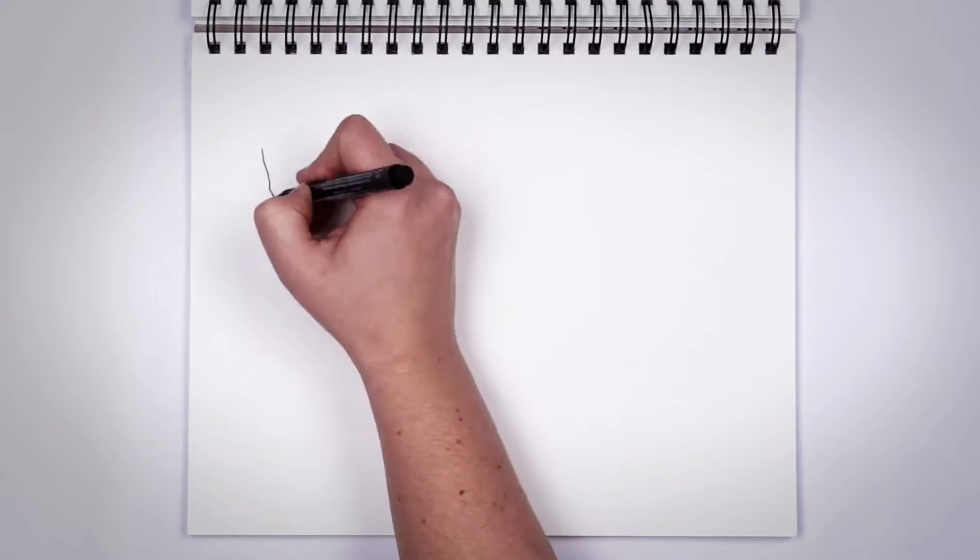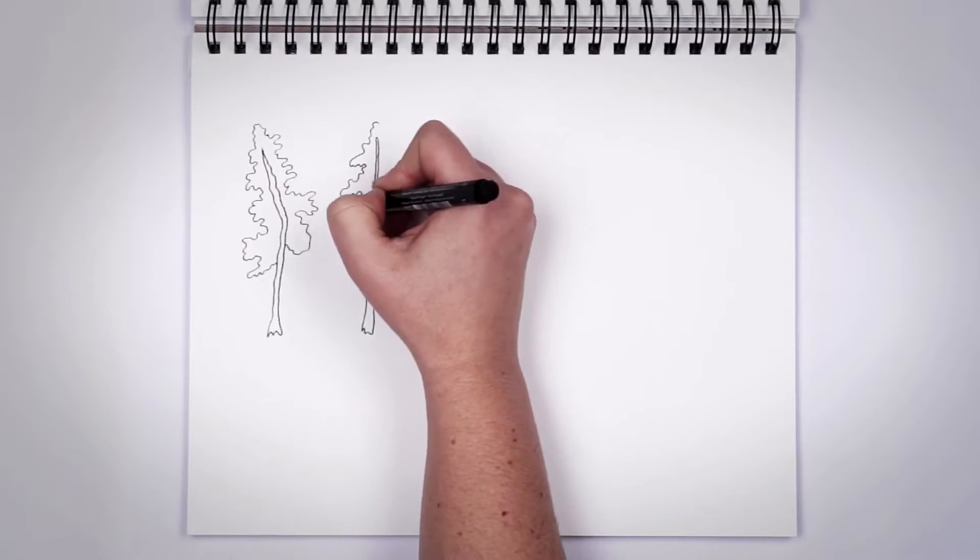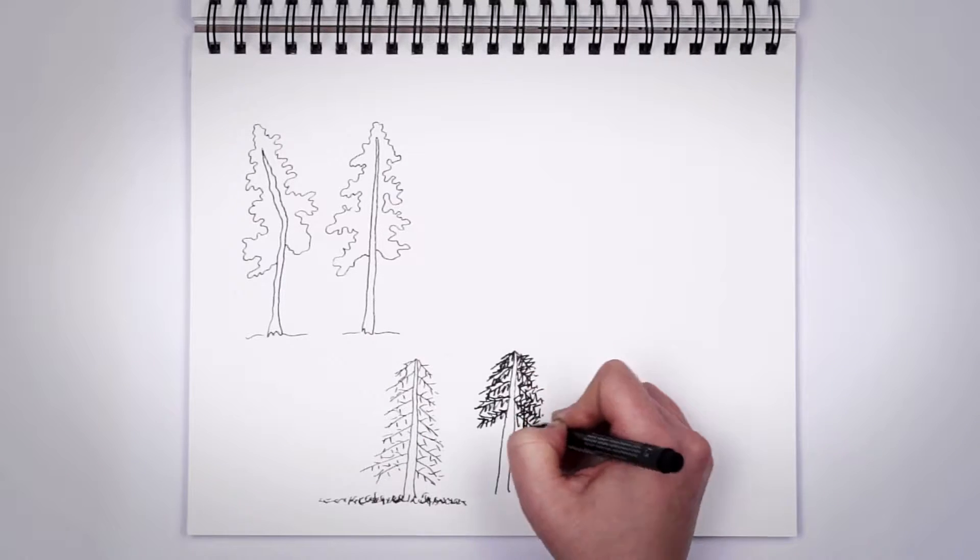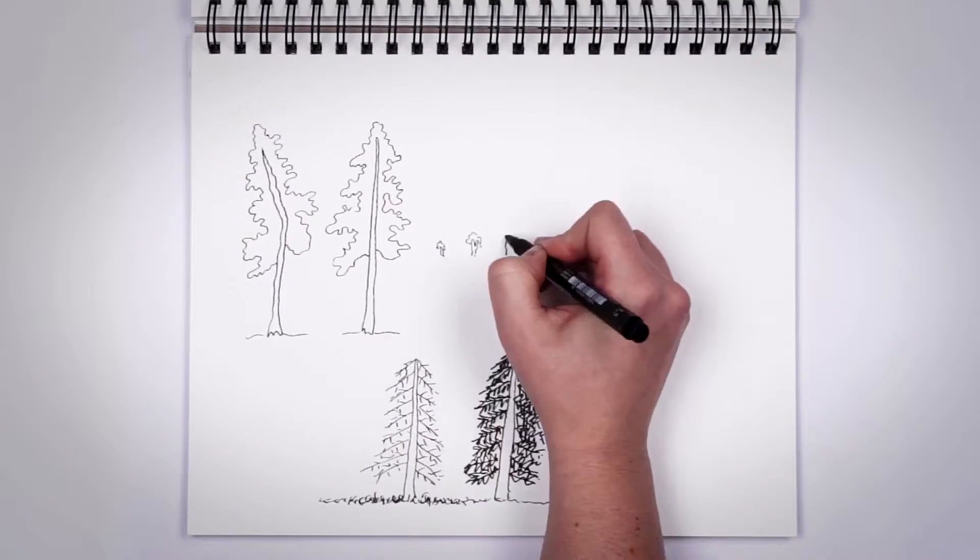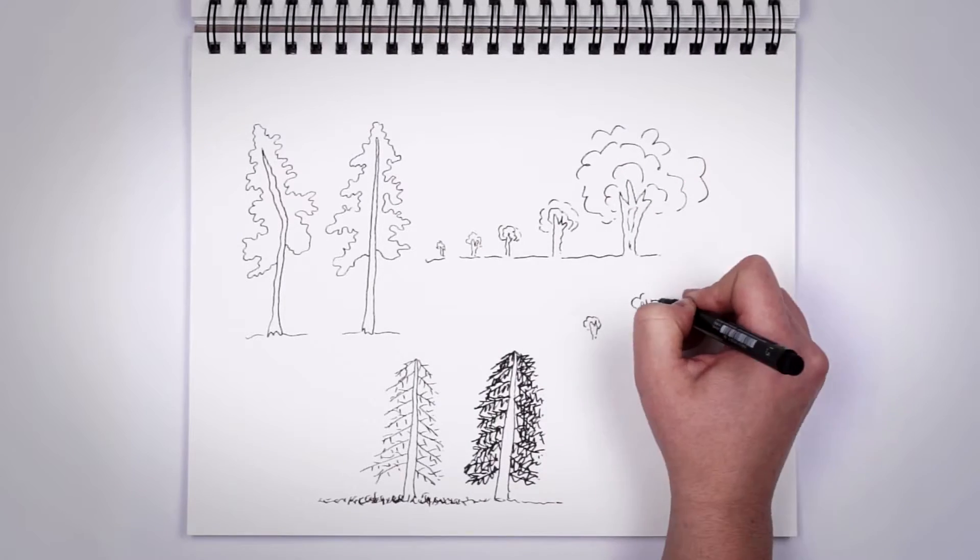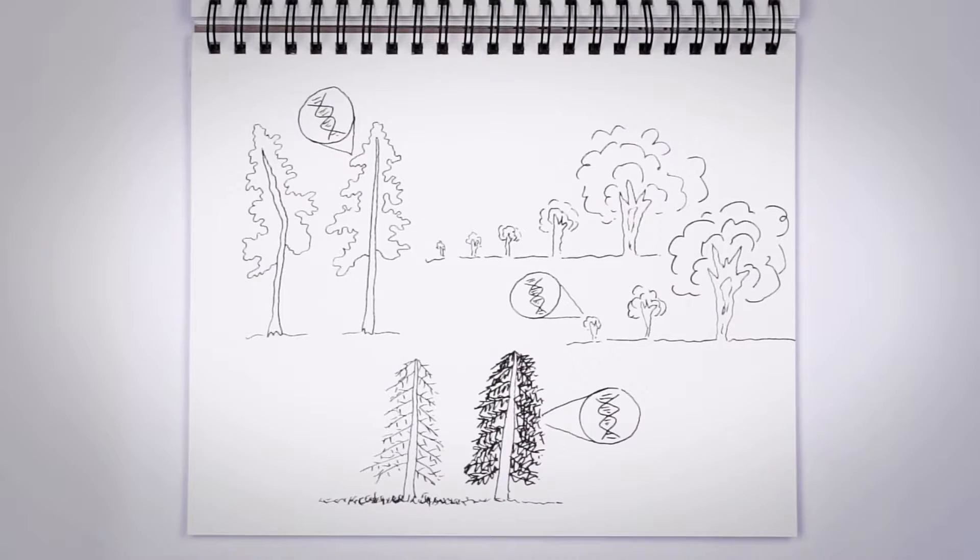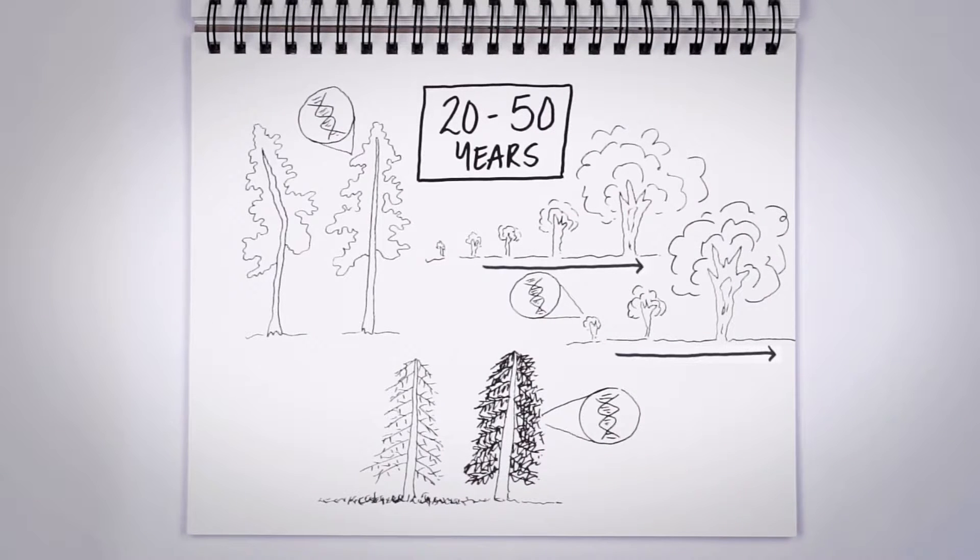In forestry, we use genomics to see which trees will have important commercial traits like straight limbs, needles that stay on longer, and faster growth rates. This is highly valuable for tree breeders. Without this tool, they'd have to wait 20 to 50 years for a tree to grow to maturity to see if it had the desired traits.